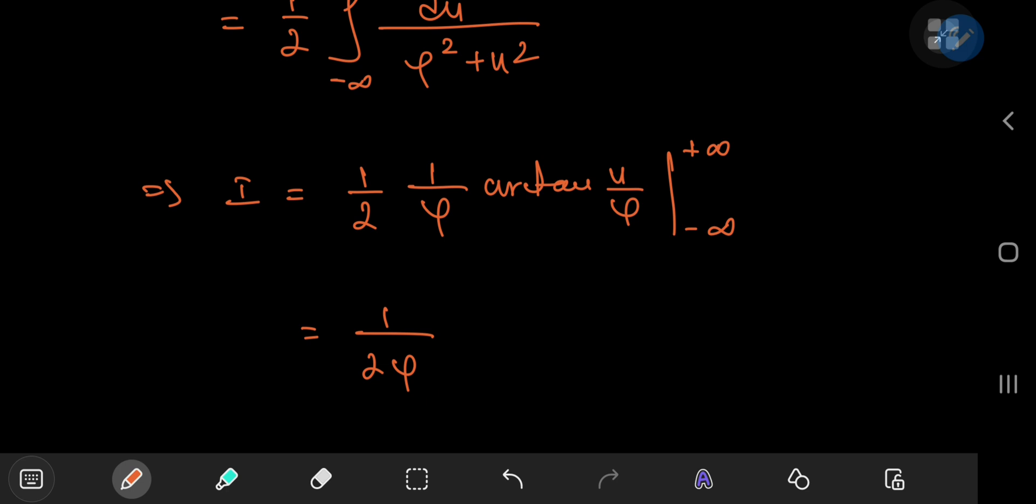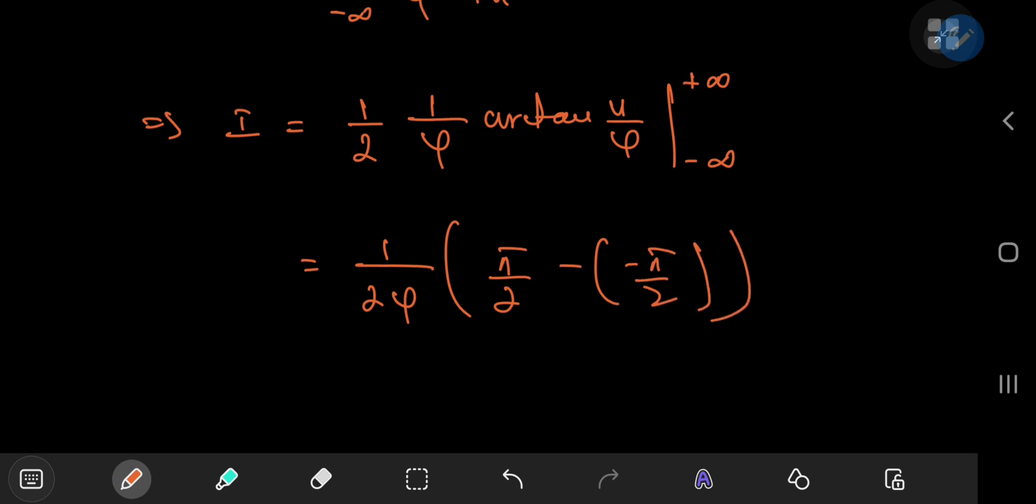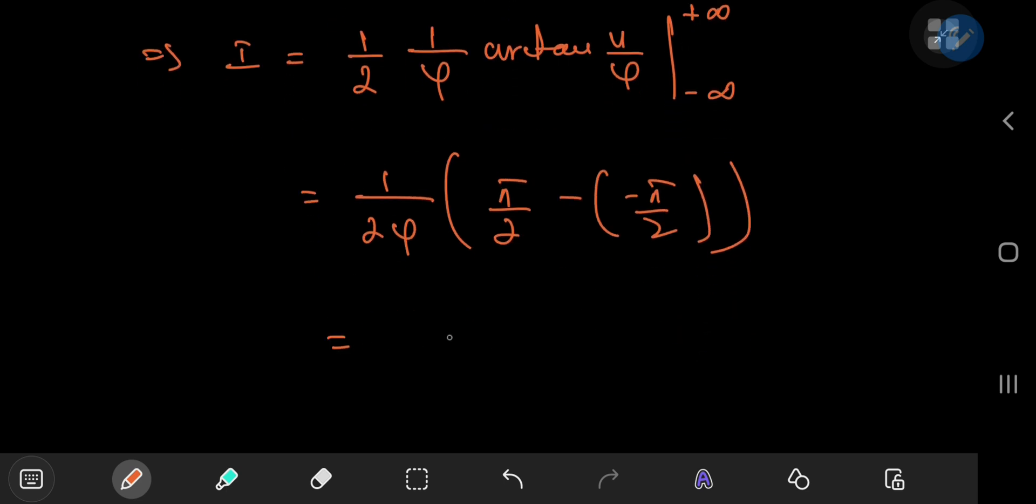So outside, we have 1 by 2 phi. And in the limit, as u goes to infinity, we get a positive pi by 2. Minus, now, in the limit, as u approaches negative infinity, you're going to get a negative pi by 2. So that's pi by 2 plus pi by 2, which gives you pi. So we have this really elegant result for the integral. It equals pi divided by 2 times the golden ratio.